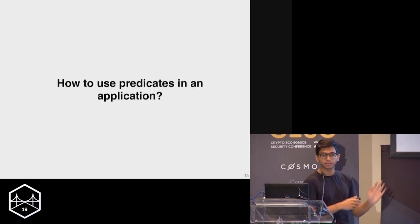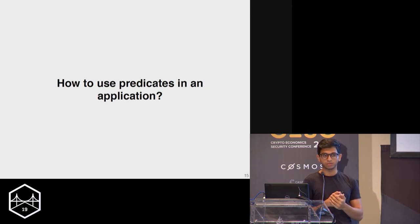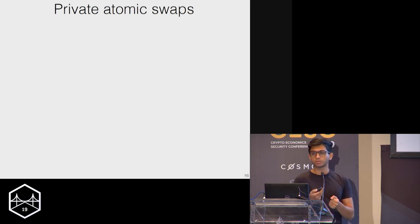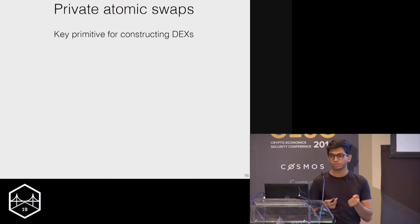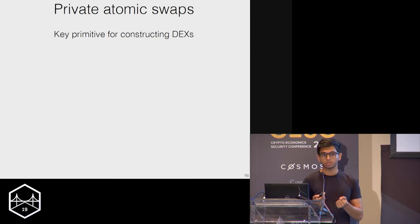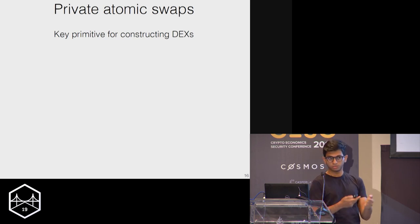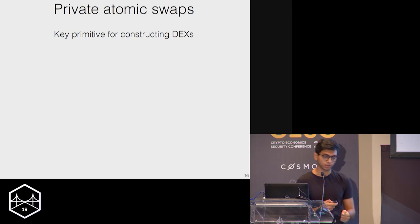We have predicates inside our system like Bitcoin scripts. To construct a DEX, the first step is to construct atomic swaps — the key primitive for constructing DEXs. You don't want it to be the case that when you're trading with somebody, they take your coins but you don't get your asset in return. So you want your swap to be atomic.